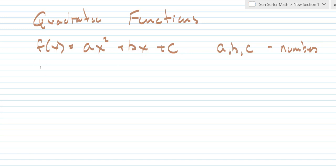Some examples of this would be f of x is equal to 3x squared minus 2x plus 1, where a is 3, b is negative 2, and c is equal to 1.